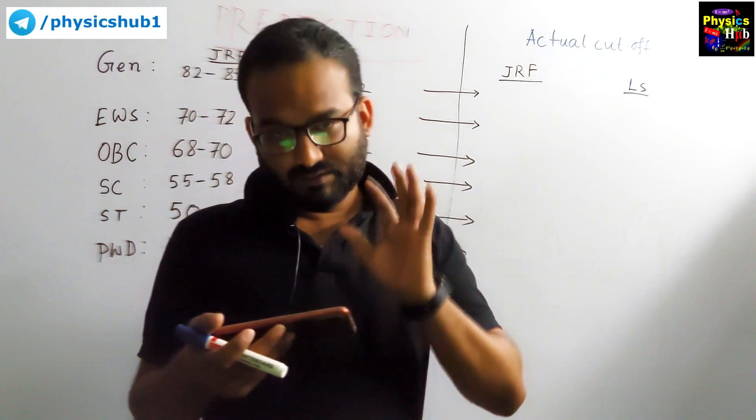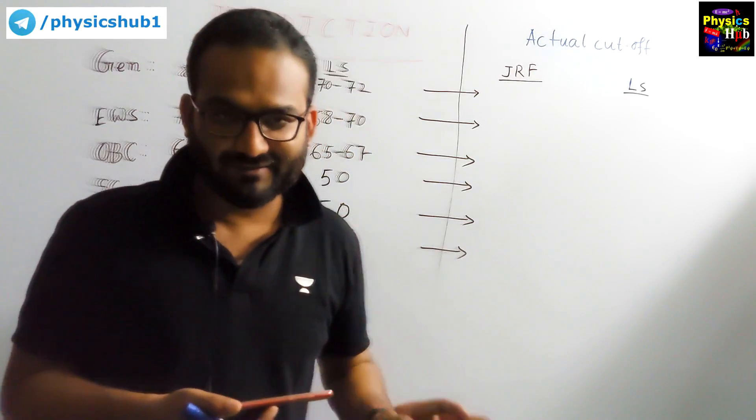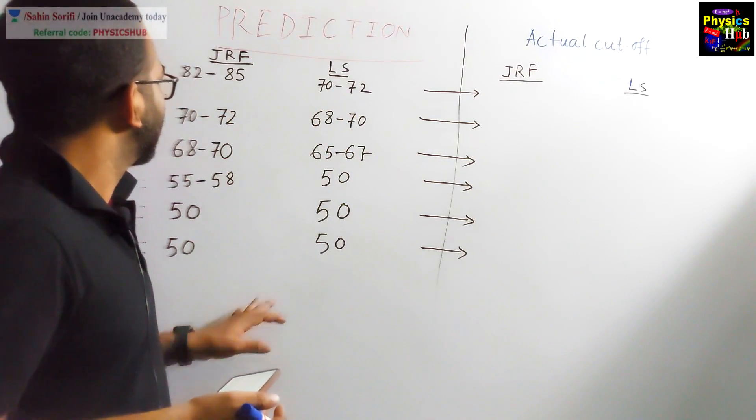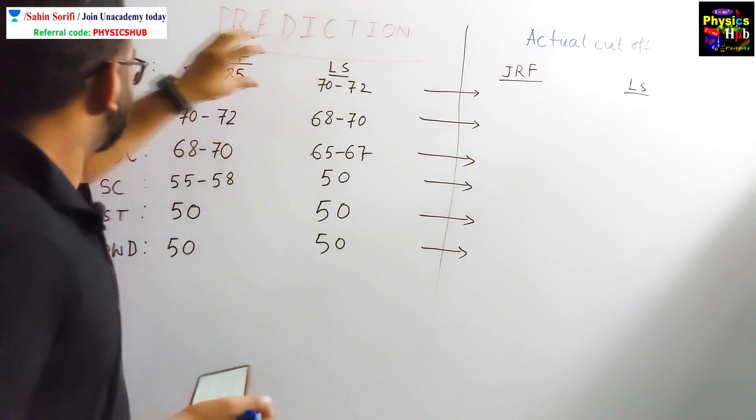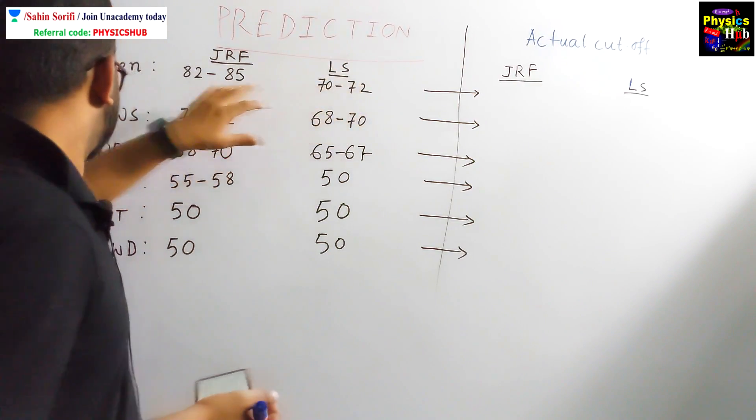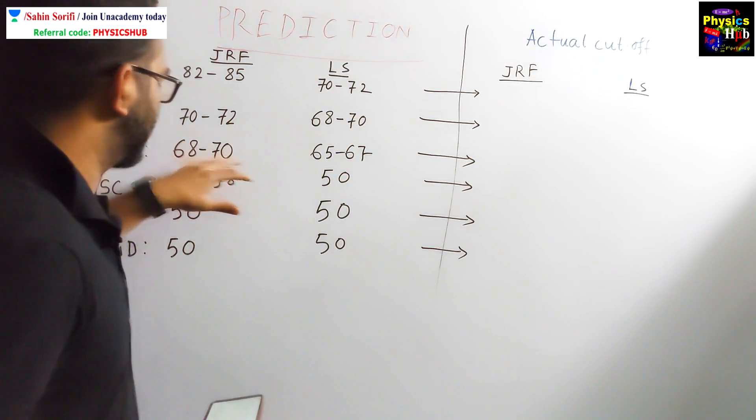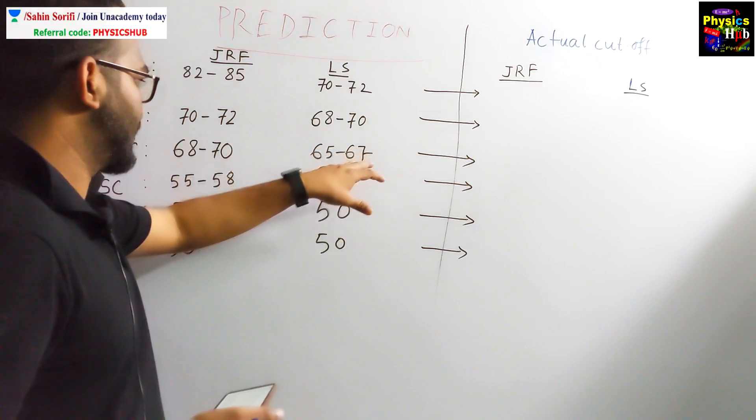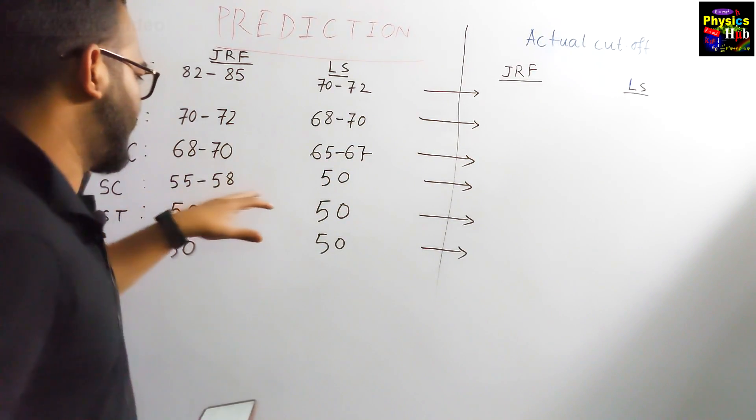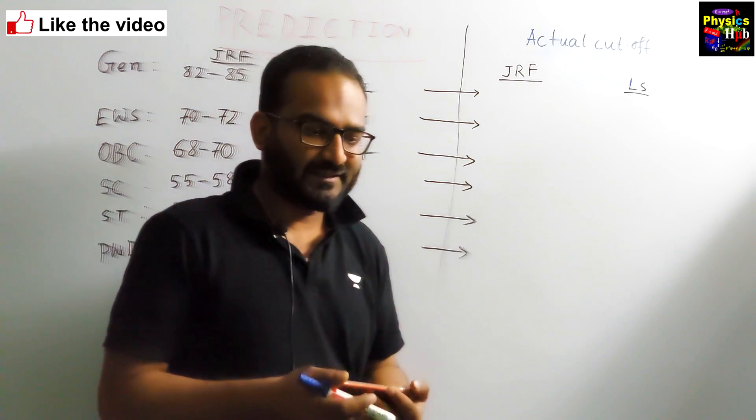So you can see this list. Now first I will tell you what was our prediction from Physics Hub. So for JRF and LS, general I told 80 to 85, LS 70 to 72, EWS 70 to 72, 68 to 70, OBC around 70, LS 65 to 67, SC 55 to 58, 50, 50, 50. We predicted this thing.